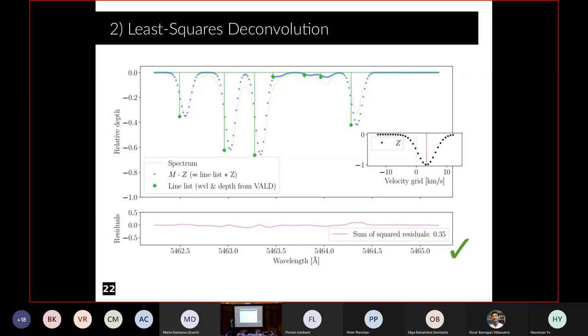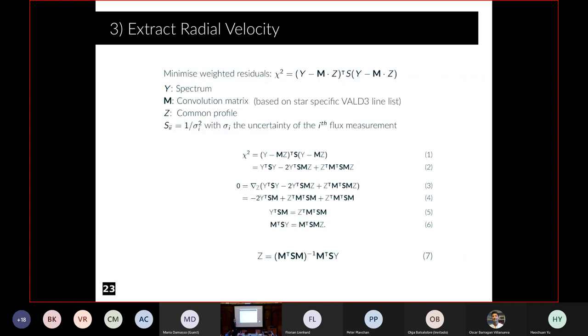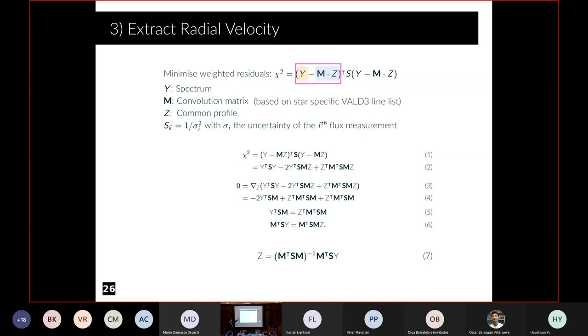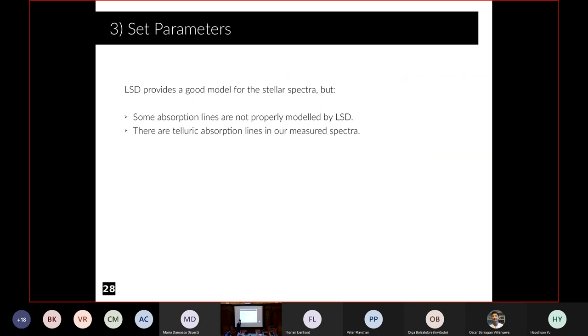In practice, we don't have to assume anything about the shape of the common profile, and we don't have to do this iterative process either. You can simply compute it directly only from the spectrum Y and the input from the VALD database: the wavelength, the distance information, and the uncertainties. Y is the spectrum, M times Z is the model in blue, and then in pink there's the residuals. We minimize chi-square doing some linear algebra and then we get that Z, the common profile, is just this expression here. We don't need to do any iteration.